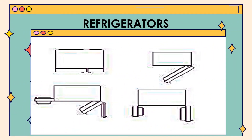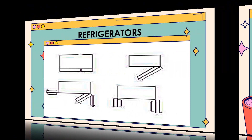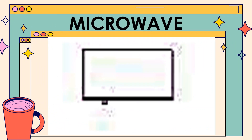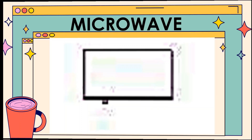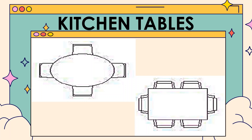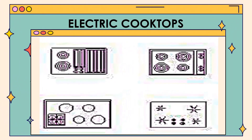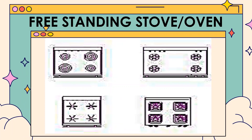This is the kitchen floor plan symbol of refrigerators. This is the kitchen floor plan symbol of microwave. This is the kitchen floor plan symbol of kitchen tables. This is the kitchen floor plan symbol of electric cooktops. This is the kitchen floor plan symbol of oven.